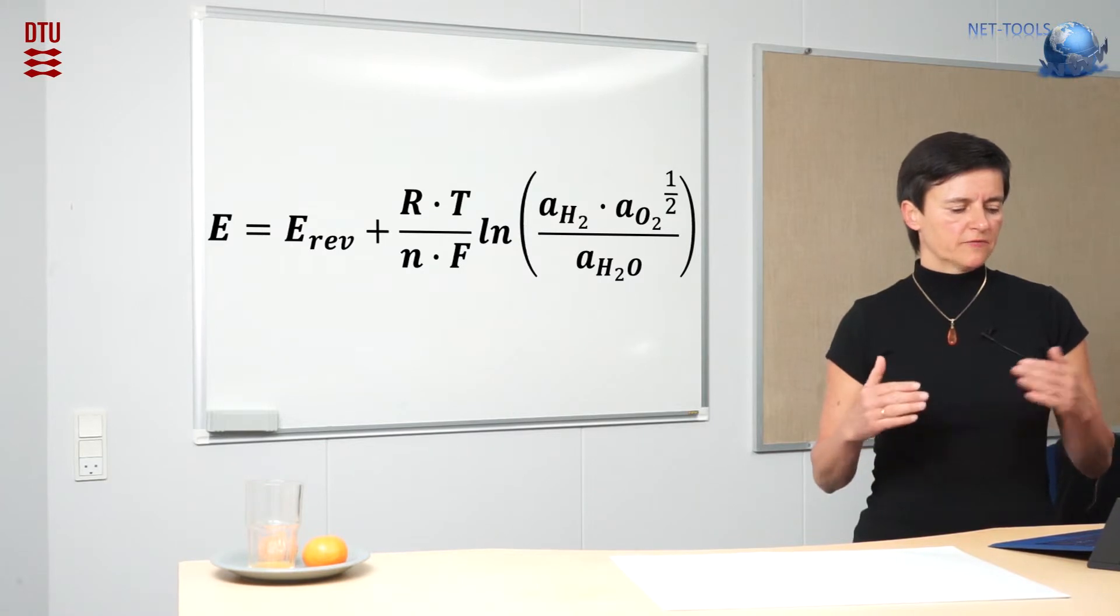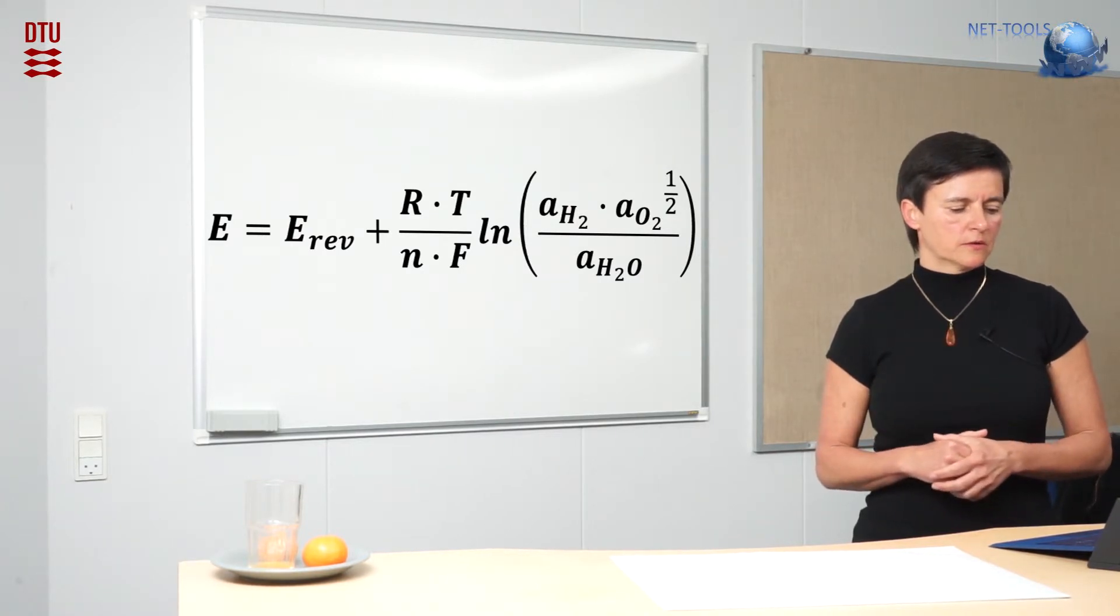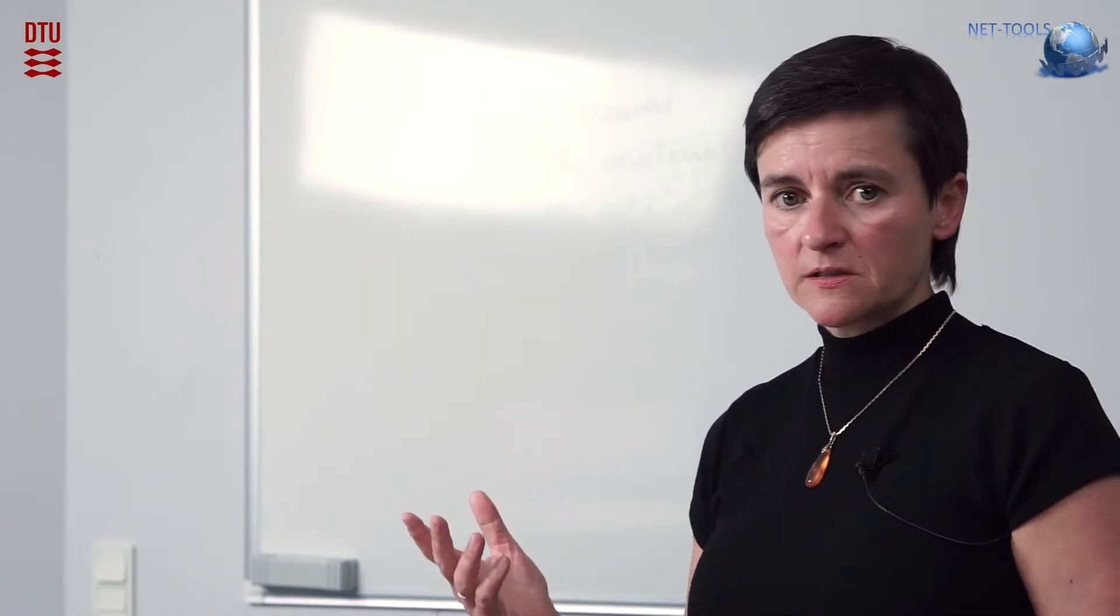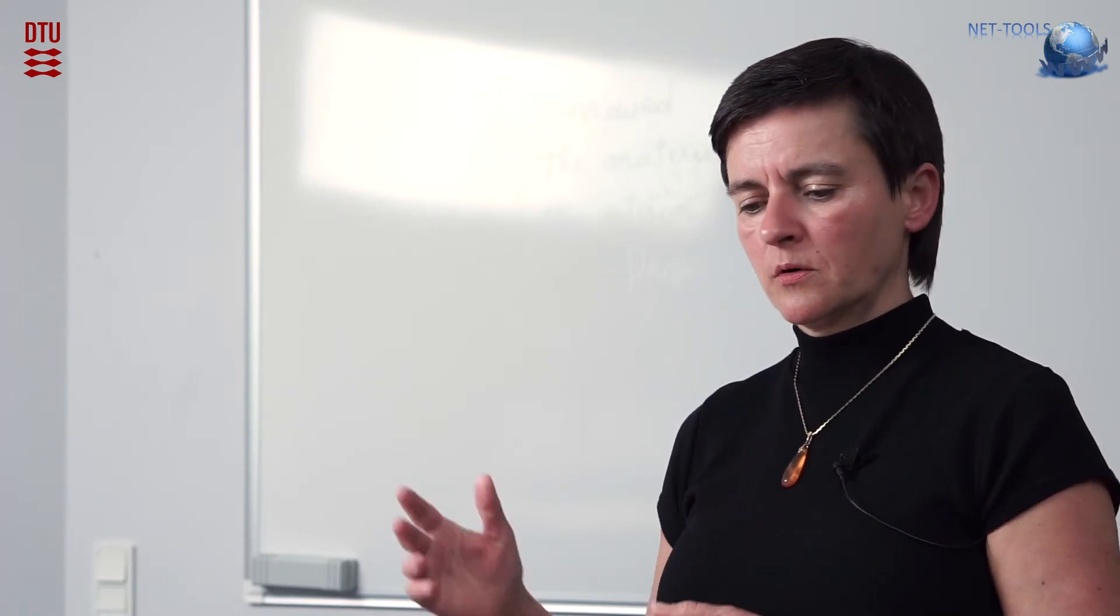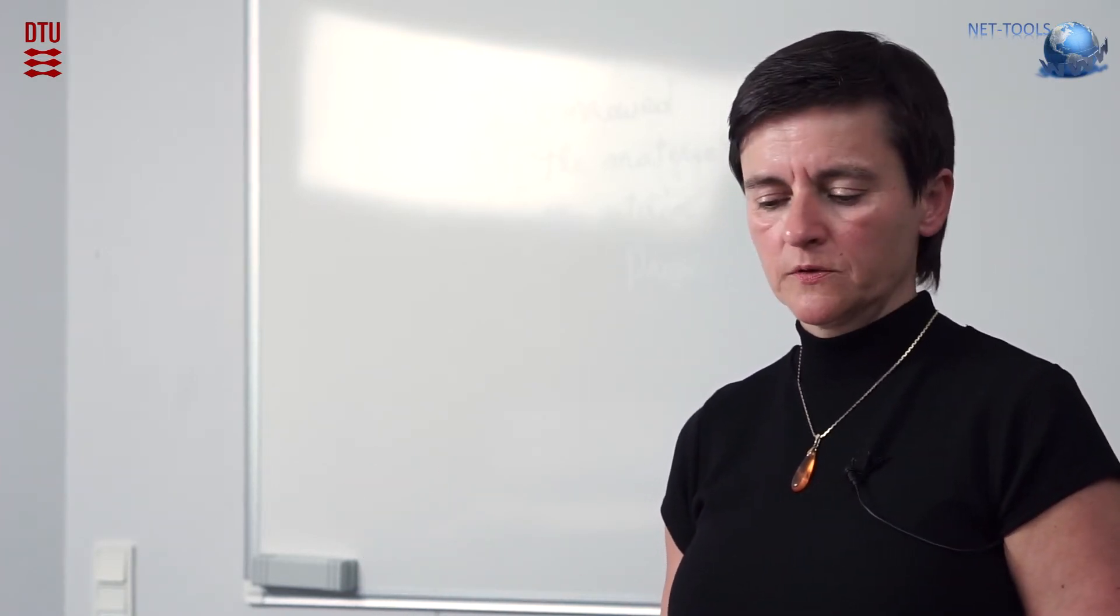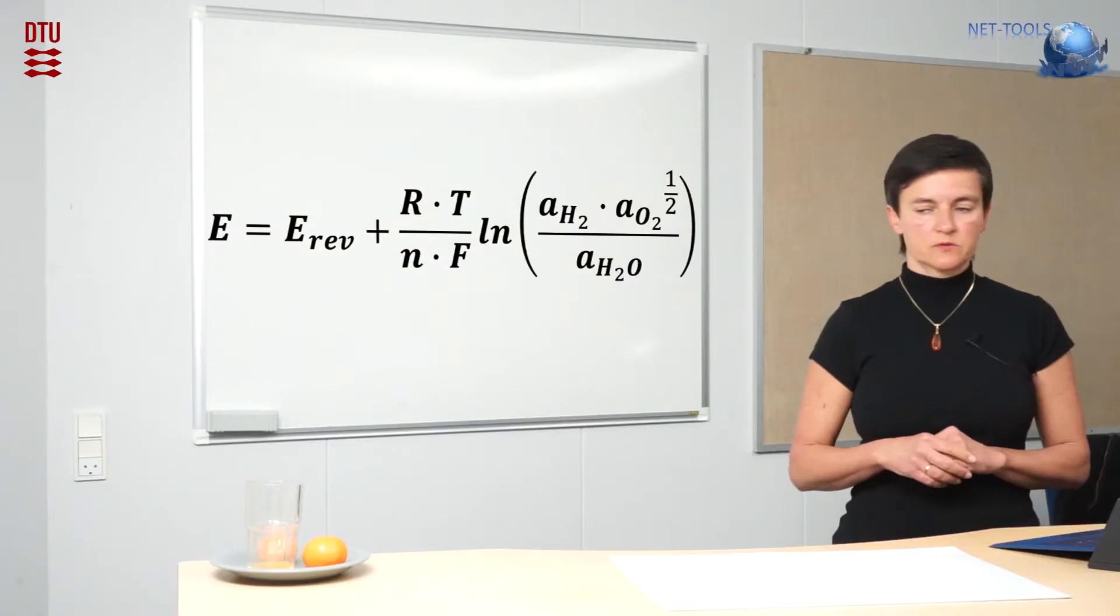So you will always have an effect of the concentration on the cell voltage as well. Here the activities are given - this is the most correct term. However, it is often difficult to determine. So for practical calculations, you often use partial pressures or concentrations.